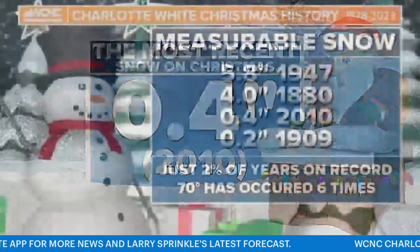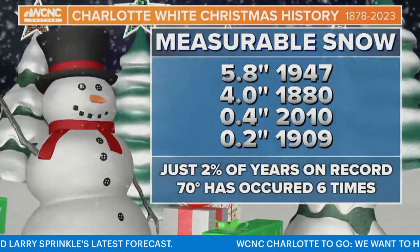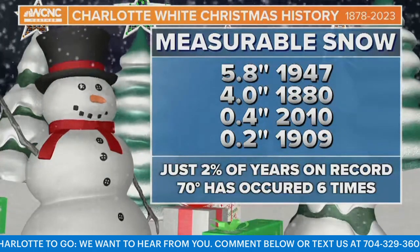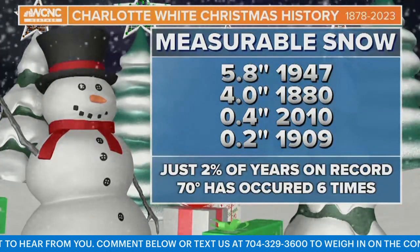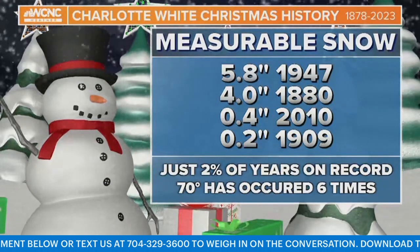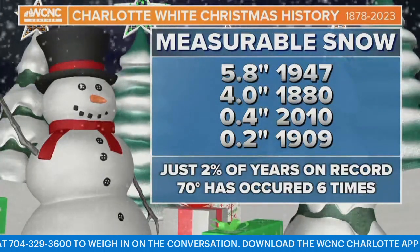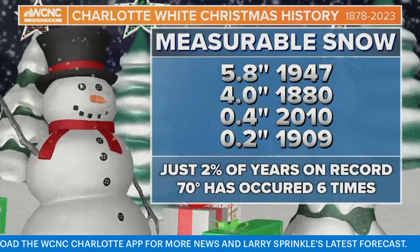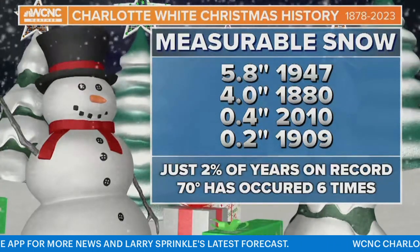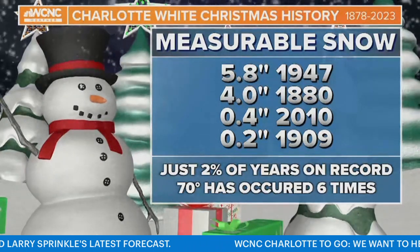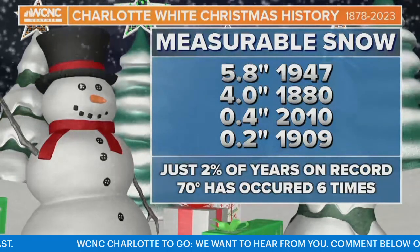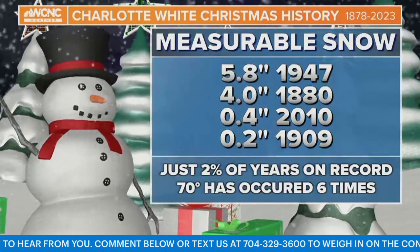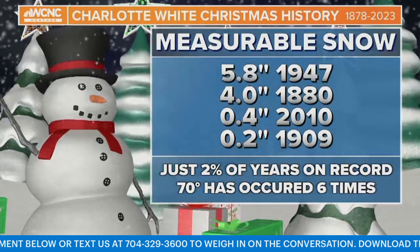Charlotte's white Christmas history: the biggest measurable snow was in 1947 — 5.8 inches. Back in 1880, four inches. In 2010, four-tenths of an inch, and in 1909, two-tenths of an inch. Just two percent of years on record have had snow. What would the city do with five inches? Everything would just shut down — for a week. It shuts down for far less. Two inches, maybe even one inch, can shut the city down.